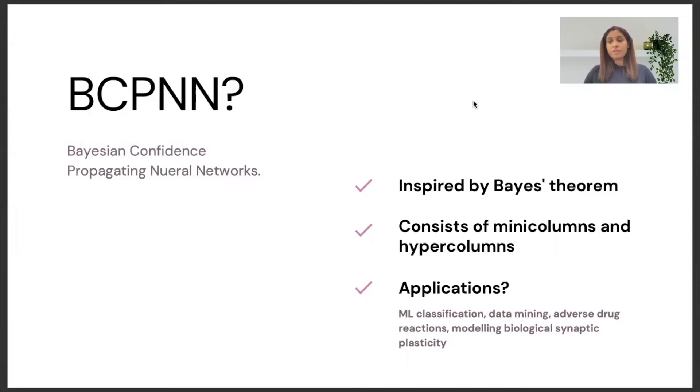BCPNN can be used for various applications. It has been used for machine learning classification, data mining, discovery of adverse drug reactions, understanding systems, understanding biological synaptic plasticity and intrinsic excitability of large-scale spiking neural network models.